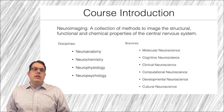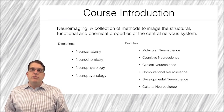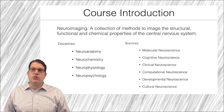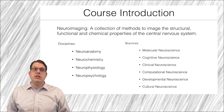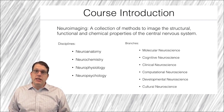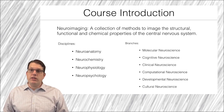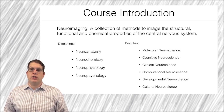Neuroimaging is a collection of methods to image the structural, functional, and chemical properties of the central nervous system. It is a method that is employed by many disciplines and in many branches of neuroscience.